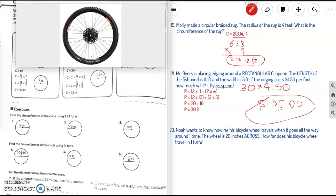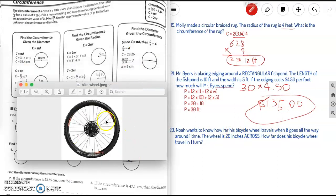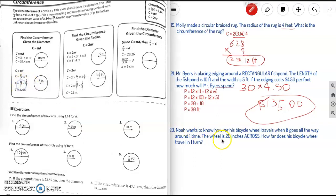Noah wants to know how far his bicycle wheel travels when it goes all the way around one time. The wheel is 20 inches across, so that's the diameter. How far does his bicycle wheel travel in one turn? So, again, we're trying to find the circumference. Circumference given the diameter.